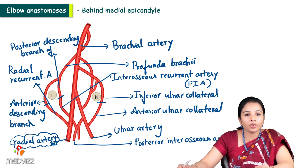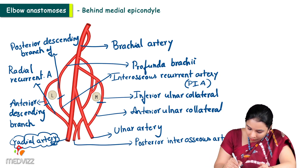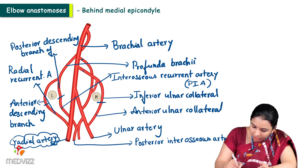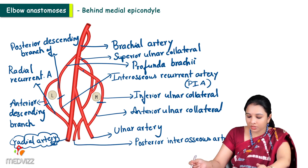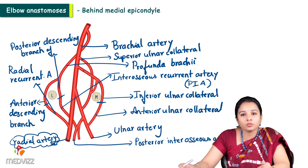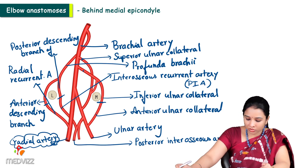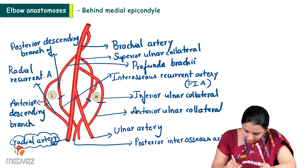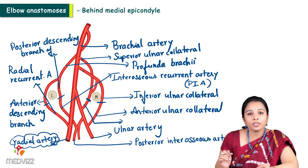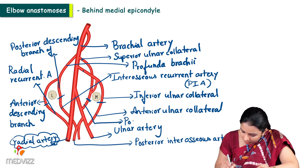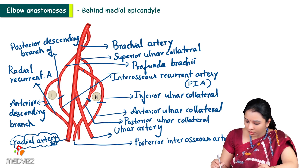Behind the medial epicondyle — posterior to the medial epicondyle — the superior ulnar collateral branch of the brachial artery anastomoses with the posterior ulnar recurrent branch of the ulnar artery. So the superior ulnar collateral, which is a branch of the brachial artery, meets the posterior ulnar recurrent branch posteriorly. This completes the four anastomotic connections around the elbow joint.